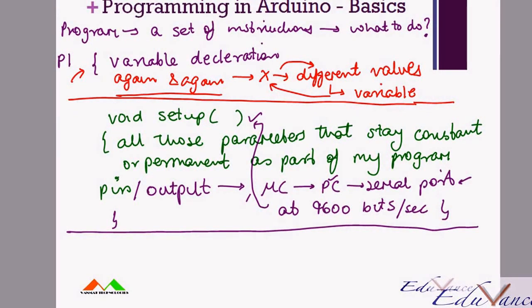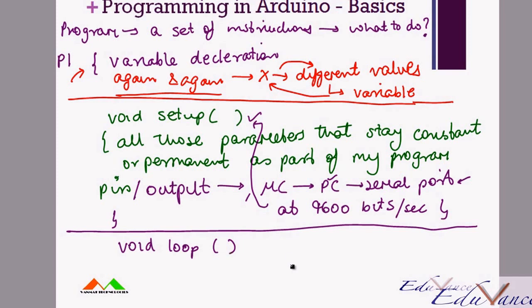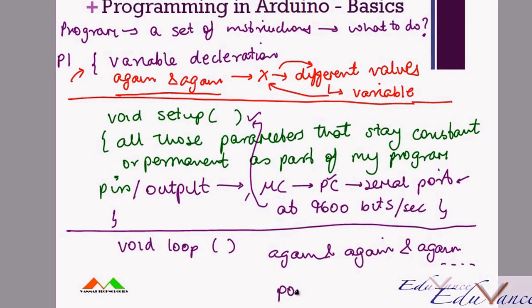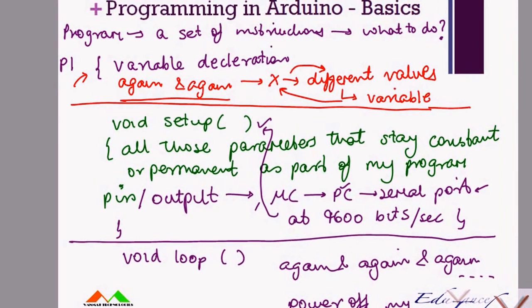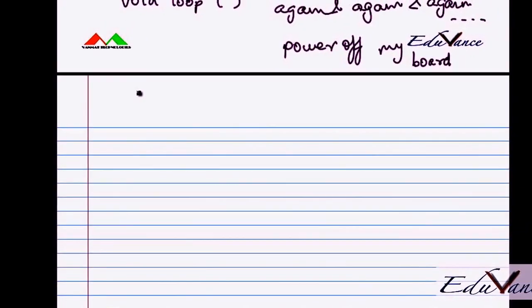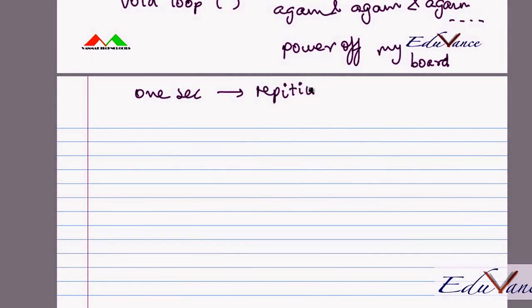The third part of my Arduino program is something that I would call a loop. As the word suggests, a loop is something that I would do again and again and again. If I would like to blink an LED or a light as part of this experiment at intervals of one second, that is a repetitive function. That would be as part of my loop.